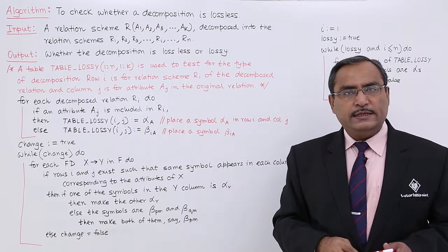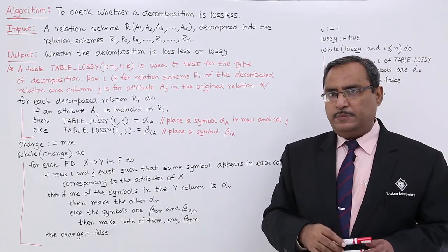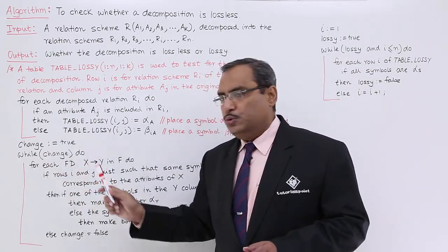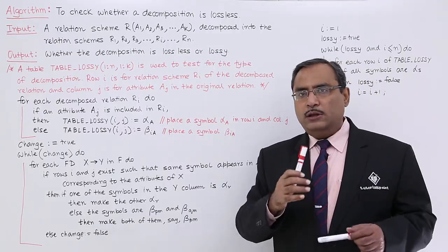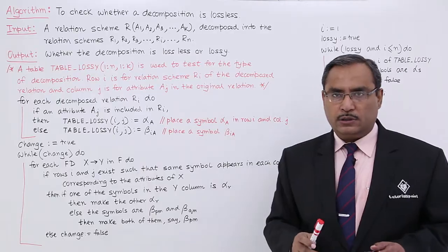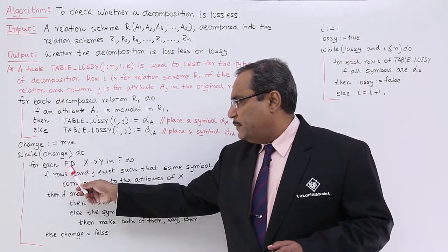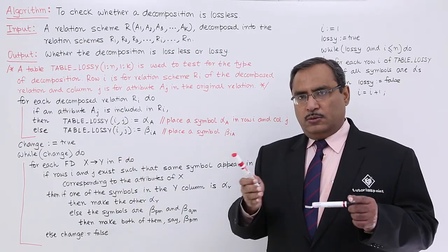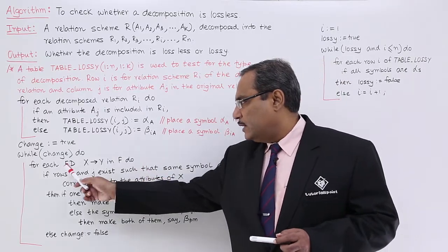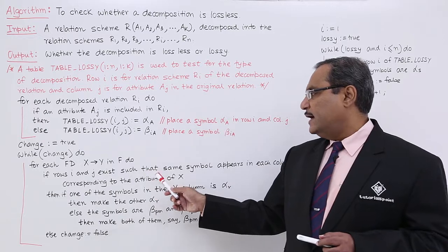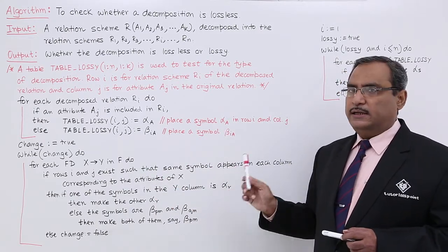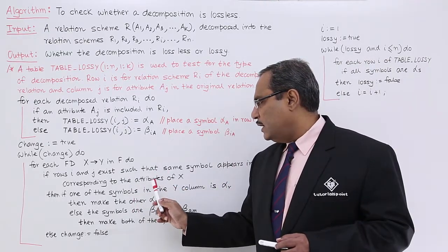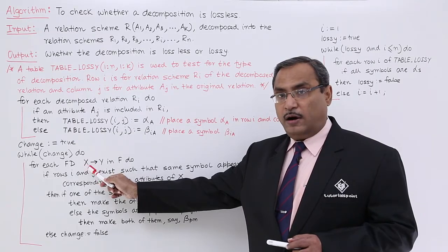We set 'change' equal to true — change is a Boolean variable, initialized to true. While change is true, the while loop continues executing. For each functional dependency X → Y in F, we continue this process.